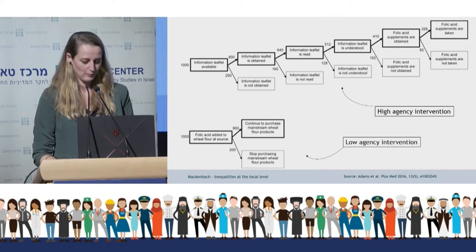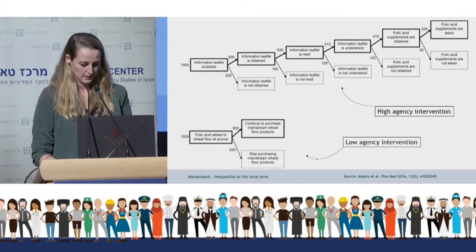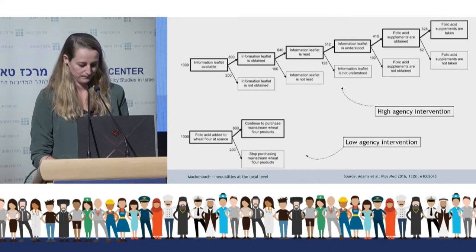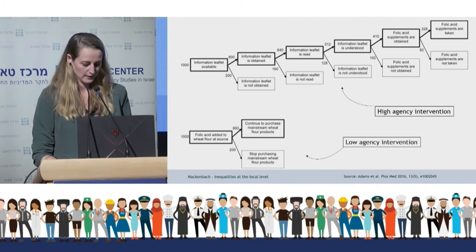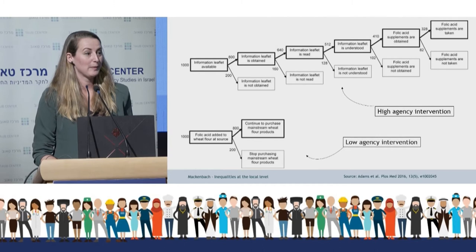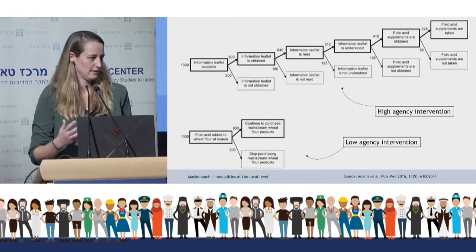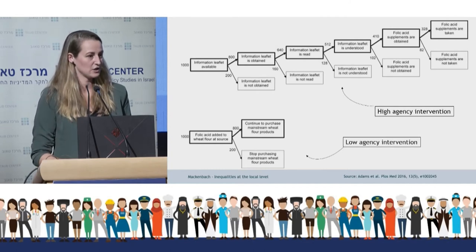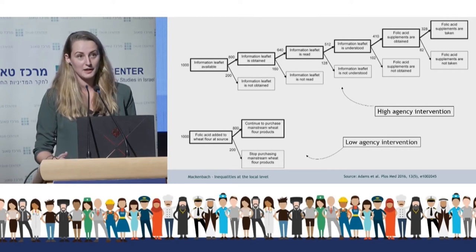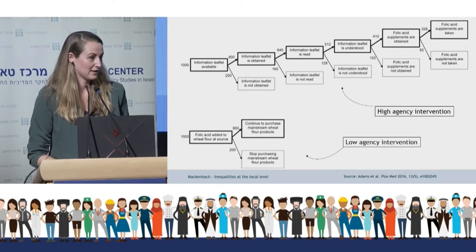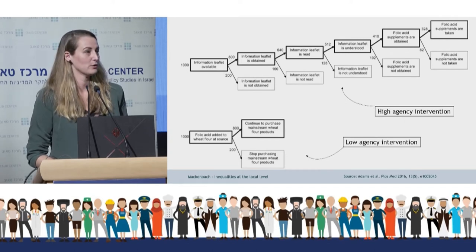For instance, think about folic acid supplementation. One type of intervention is having information leaflets available — but this requires women to access the location, be able to read and understand the leaflets, access a pharmacy, pay for the supplements, and have the discipline and time to take them daily. Quite a lot could go wrong because a high level of agency is required. Another type of intervention is to add folic acid directly to wheat flour — all women who normally purchase wheat flour will now be exposed to folic acid supplementation, reaching many more women and requiring almost no effort from the receivers.